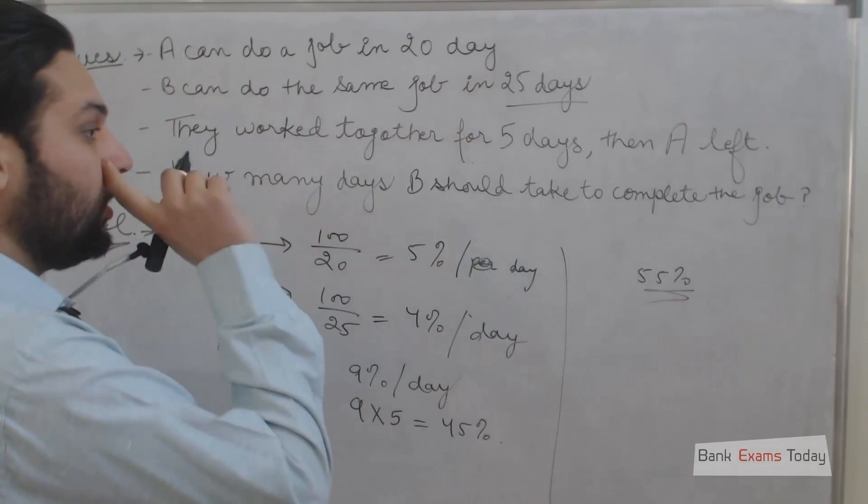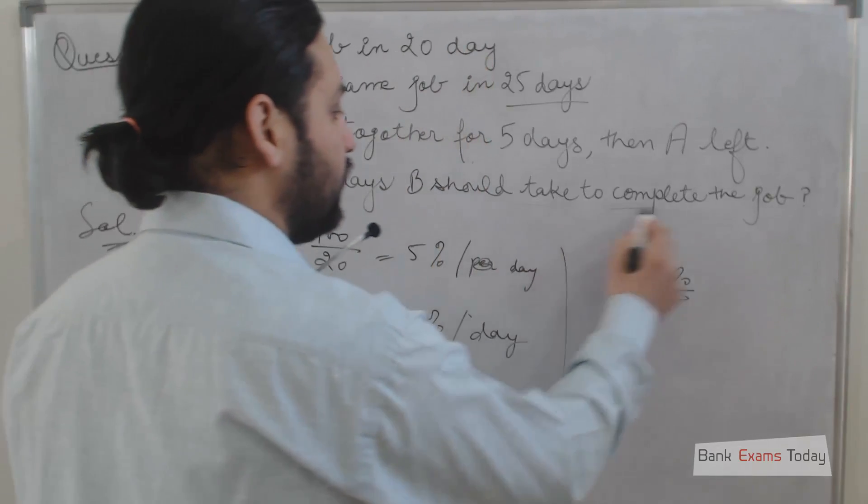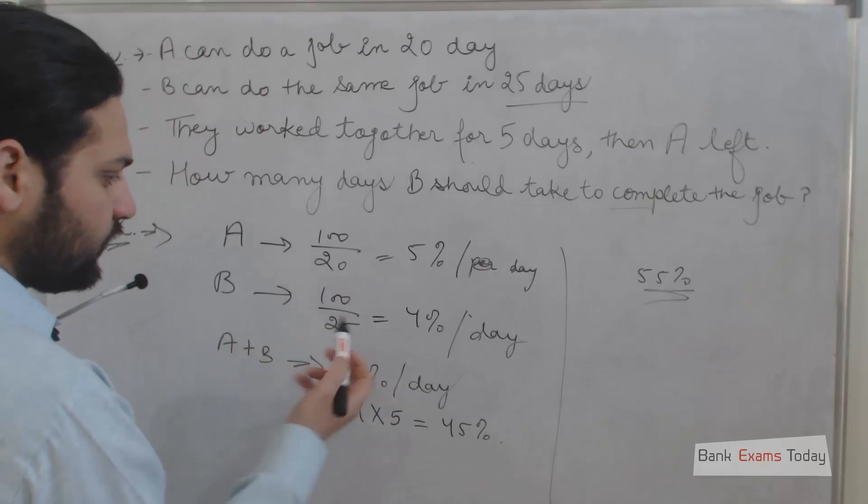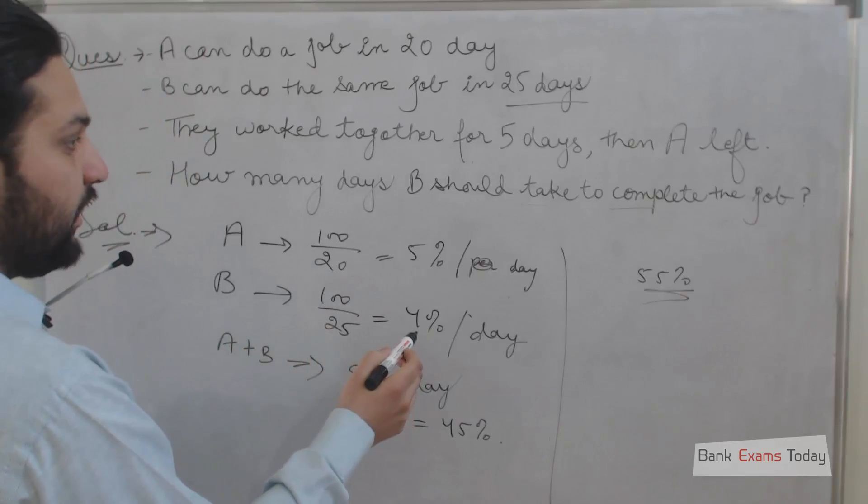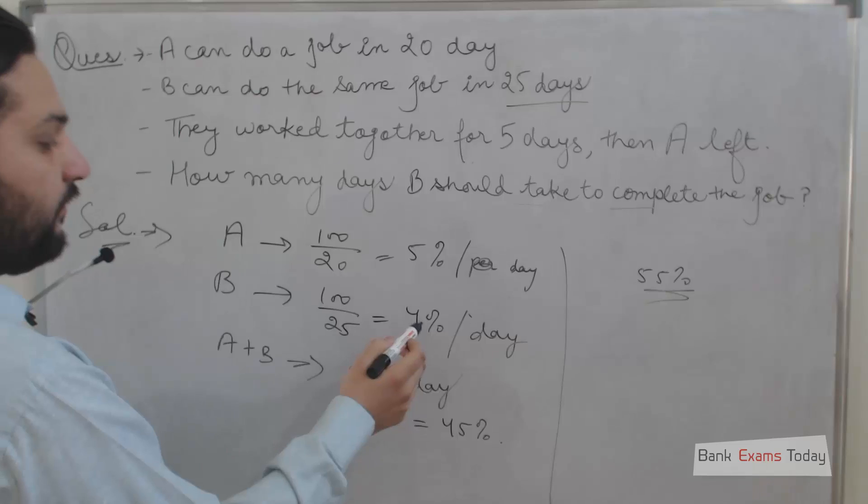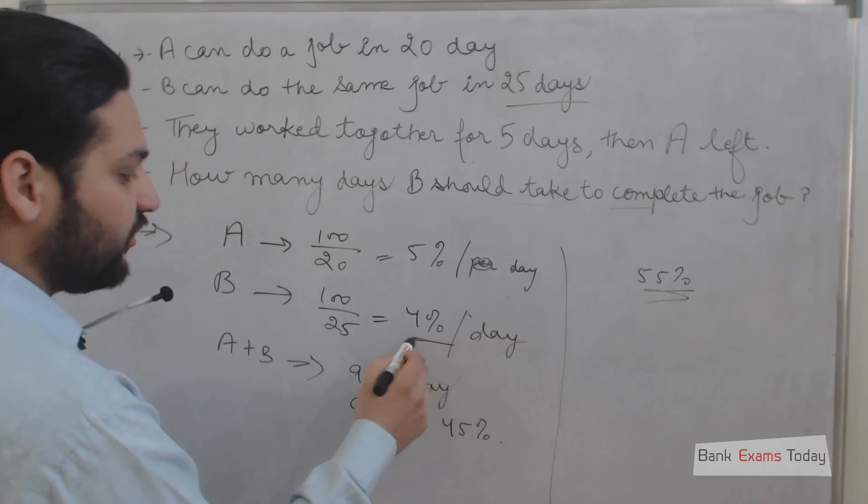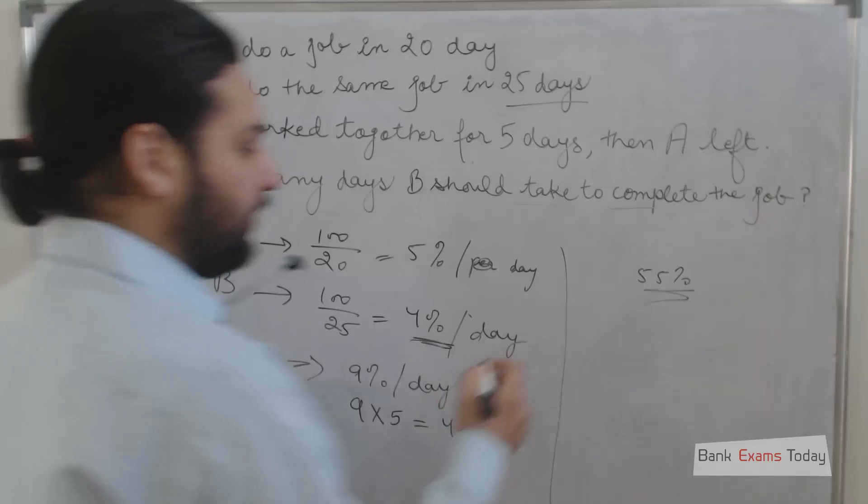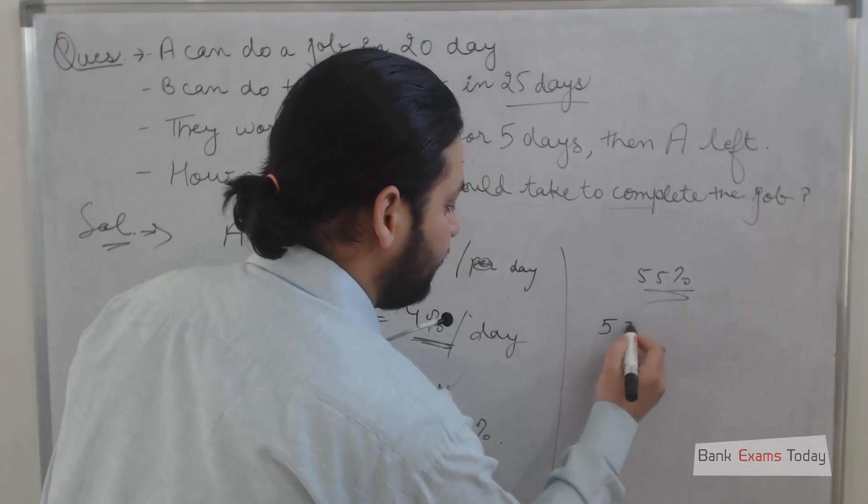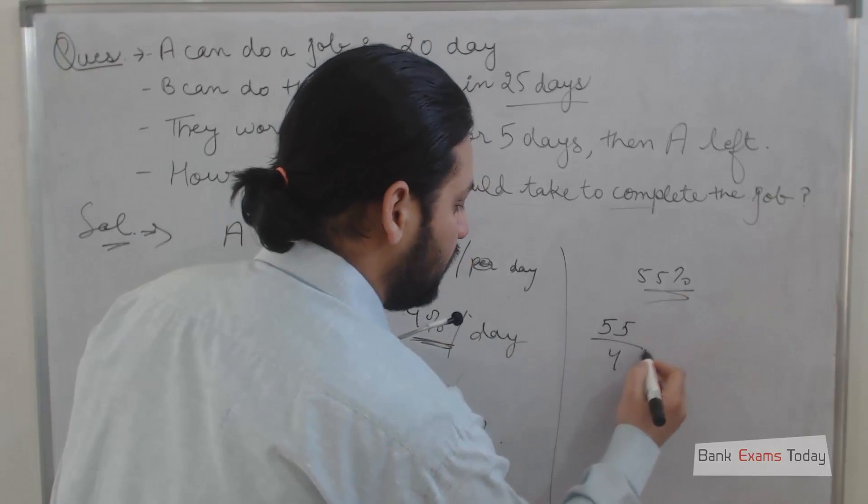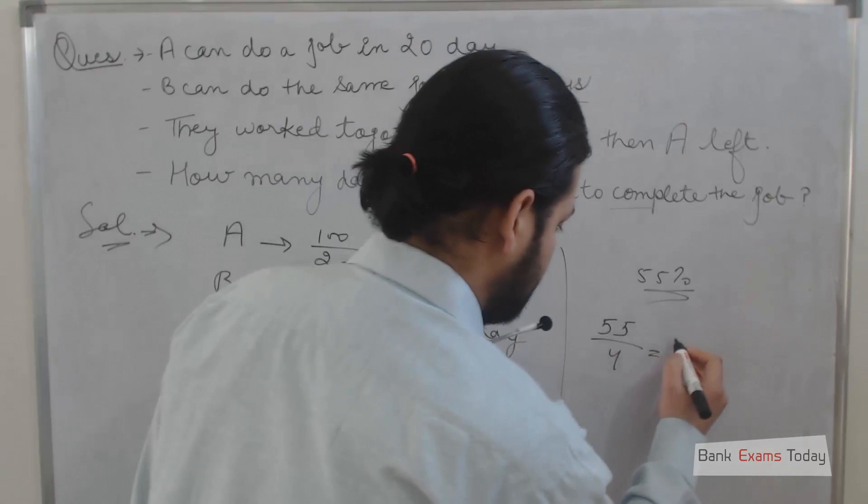If B works alone, how many days will he take to complete the job? B can do 4% of the job per day, that means we simply need to divide 55 by 4, which will become 13.75.